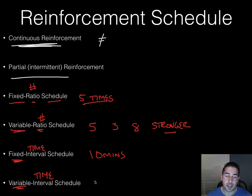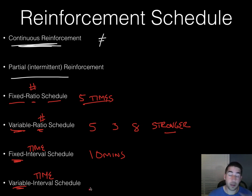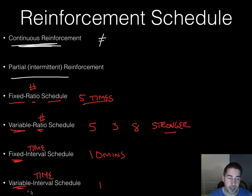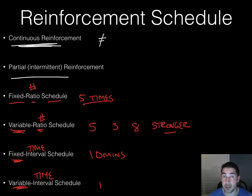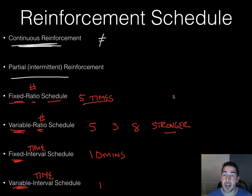Variable interval means you don't know how long you have to do the behavior, but you need to be doing it when the time comes up. For example, I might decide to check after 30 minutes without telling the student — if they're doing what they're supposed to, I reinforce them. With a fixed ratio, you might do the behavior less and then ramp it up as the fifth time approaches. With a fixed interval, you might act out and then go quiet right before the 10-minute mark.